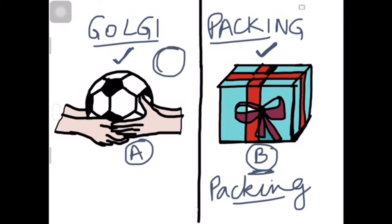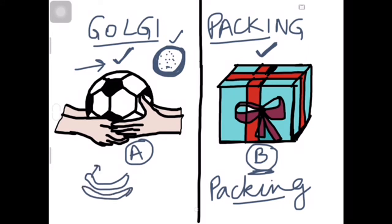Golgi apparatus is made of vesicles and membranes. Materials from the maturing face are sent for secretion — they can be removed from the cell or sent to another organelle. This way, Golgi helps by forming glycoproteins and glycolipids.